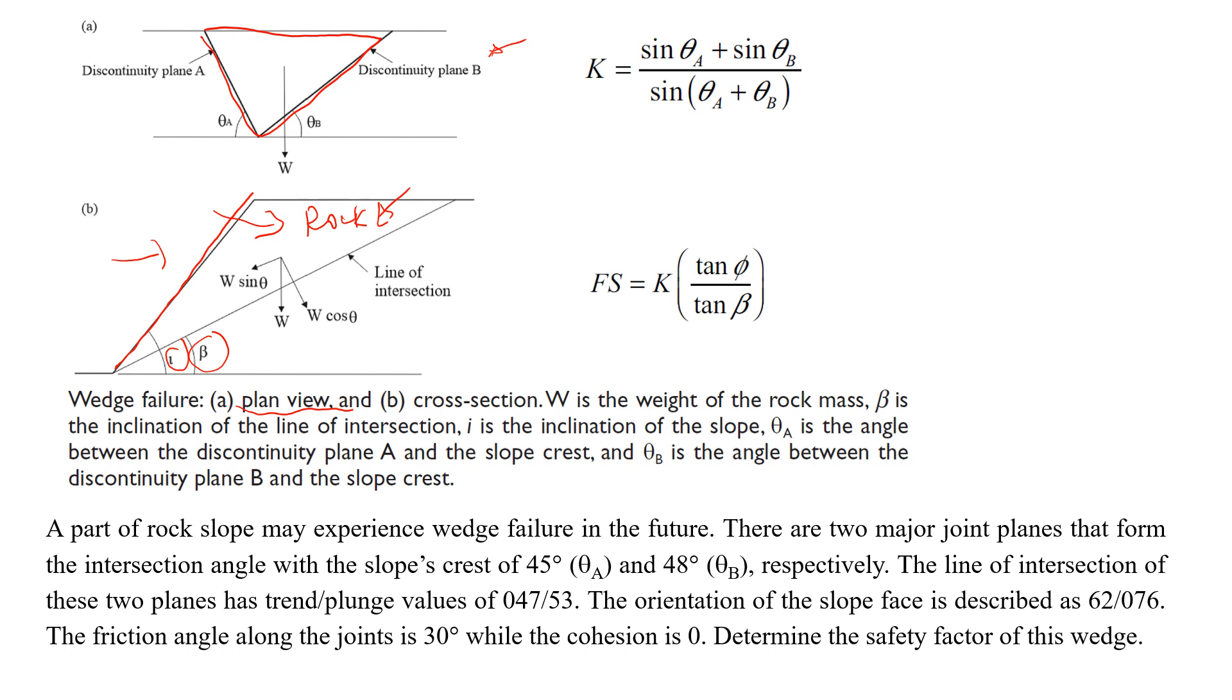But here we don't have a failure plane, we have just a line of intersection. So we have two major planes, this one let's call it plane A and plane B. So here we have a wedge and this one will be the line of intersection of these two planes A and B.